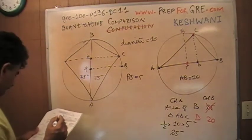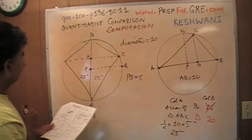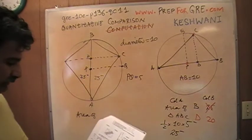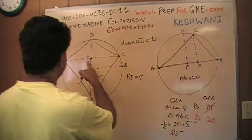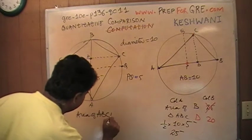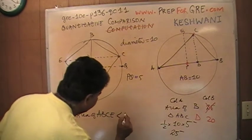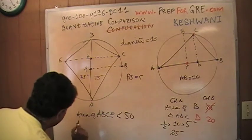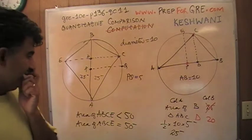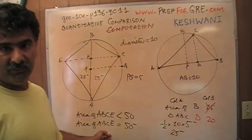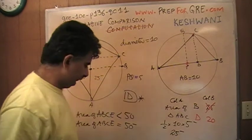The other column has 40. The area of the quadrilateral ABCE is less than 50, but simply knowing it is less than 50 does not tell me how it compares with 40. It could be 45, it could be 41, it could be 38 — I can't tell how it compares with 40. Therefore the answer is D.